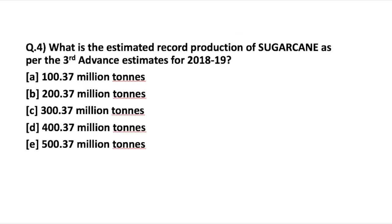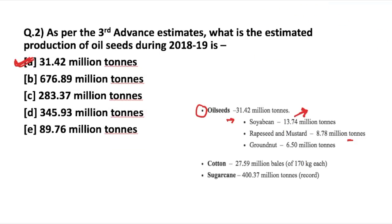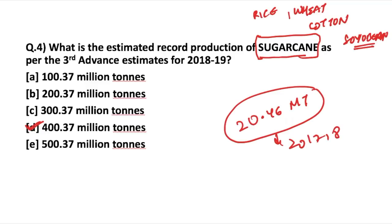The next question asks about the estimated record production of sugarcane. Similar questions could also come for rice, wheat, cotton, or soybean, as they are major contributors. For cotton, the production is 27.59 million tons. For sugarcane, the estimated production is 400.37 million tons, which is an increase of approximately 20.46 million tons over the 2017-18 production. So by adding 20.46 million tons, the estimated sugarcane production for 2018-19 is 400.37 million tons.